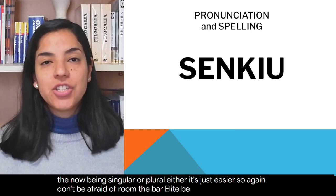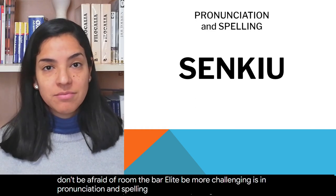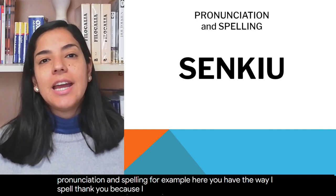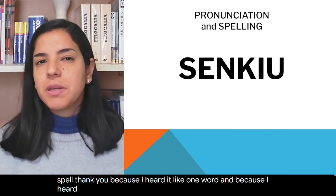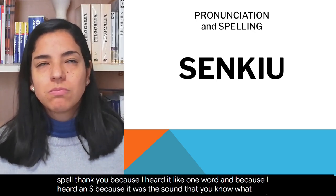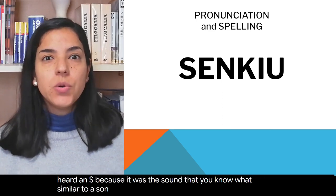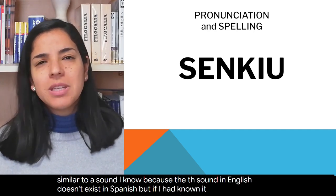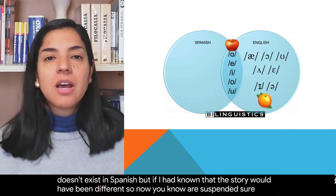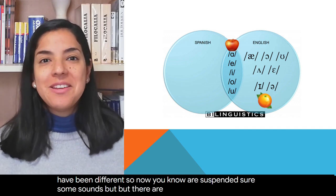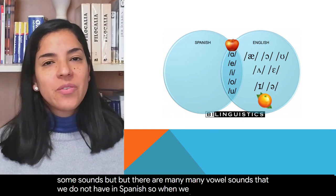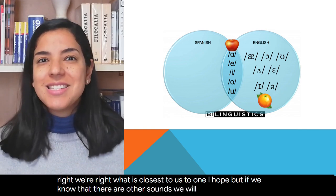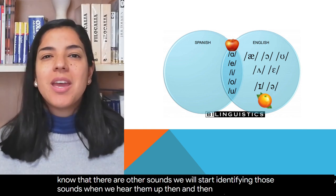The part that can actually be more challenging is pronunciation and spelling. For example, here you have the way I spell 'thank you' — because I heard it like one word and I heard an S, because it was the sound similar to a sound I knew. The TH sound in English doesn't exist in Spanish. English and Spanish share some vowel sounds, but there are many, many vowel sounds that we do not have in Spanish. So when we hear and when we write, we write what is closest to us. But if we know that there are other sounds, we will start identifying those sounds when we hear them, and then we'll be able to pronounce them too.